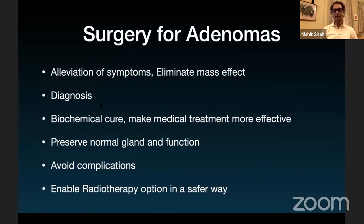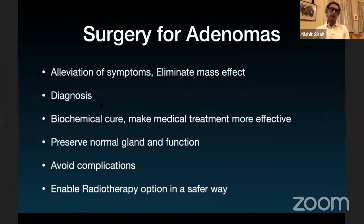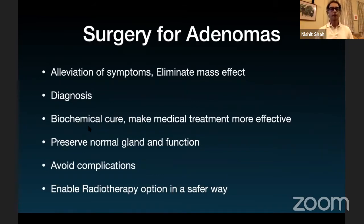Occasionally surgery is needed for diagnostic difficulty — you may have a granuloma, lymphoma, Rathke's pouch cyst, or even a craniopharyngioma that looks like a pituitary adenoma. Sometimes you need surgery just to make a diagnosis: is it hypophysitis or an adenoma? Then there is the concept of biochemical cure — removing the tumor to cure secretory tumors, or removing a large portion to make medical treatment more effective.